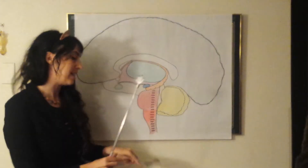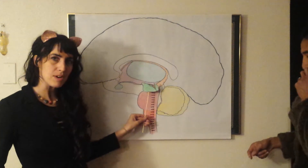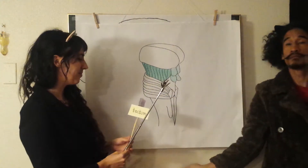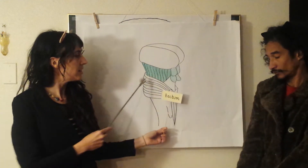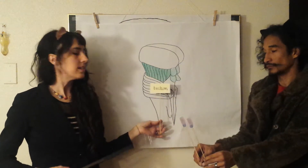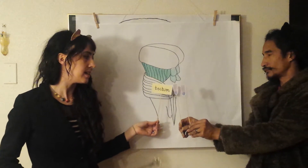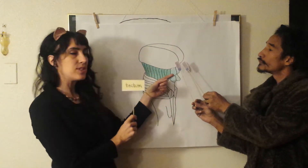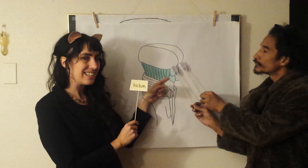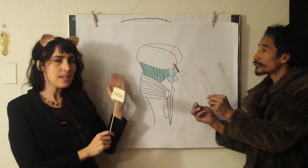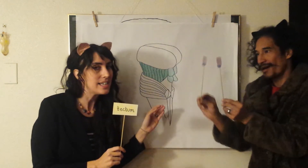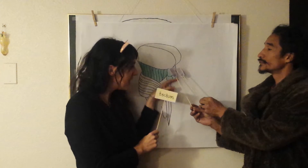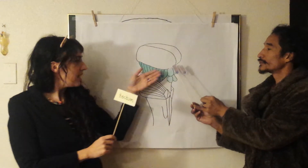Now we're going to talk about the midbrain in a lot further detail — notice it looks like an upside-down M. First we're going to talk about the tectum, represented by some techy thumbs. When we think of thumbs, we think of sensation — it's a sensory input. It's also our orientation response, much like ringing the bell in class, orienting to the stimulus. Tectum: techy thumbs, filtering that information.